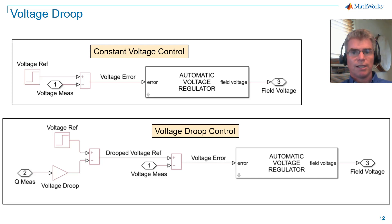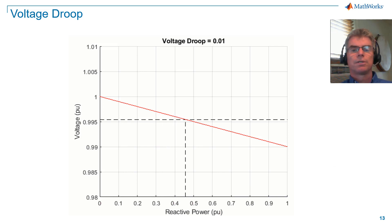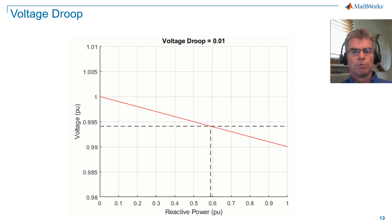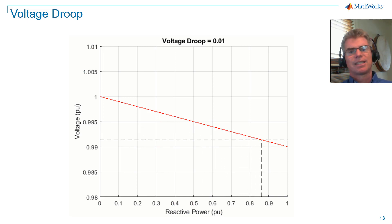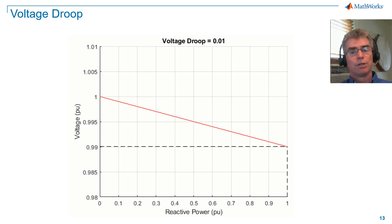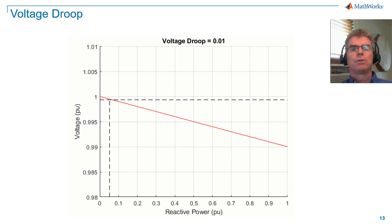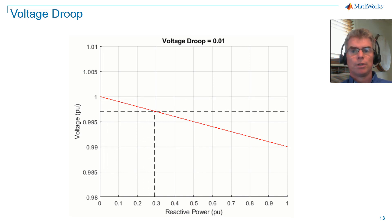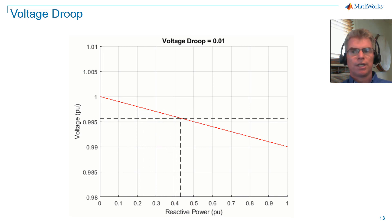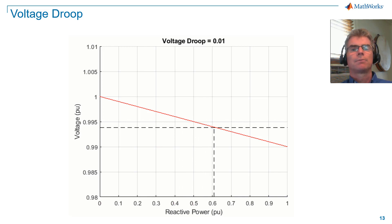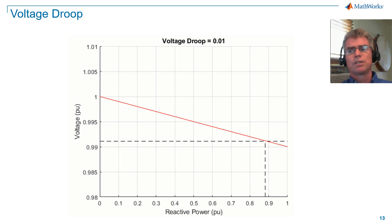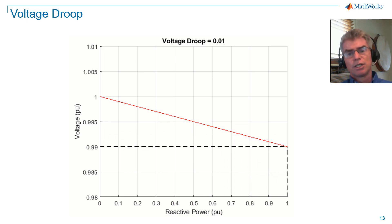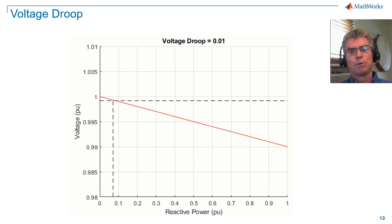The figure here shows the response of frequency to active power loading when we have a frequency droop value of 0.05 or 5%. The droop curve is shown in red, and the dashed lines indicate frequency and active power loading on a per unit or normalized basis. As we've set the droop value to 0.05, the frequency drops from one per unit to 0.95 per unit as we load the generator from zero active power to one per unit active power. Similarly for voltage droop with a droop value of 0.01 or 1%, the voltage drops from one per unit to 0.99 per unit as we load the generator from zero reactive power to one per unit reactive power. We've introduced droop control for both frequency and voltage, but how does this simple modification solve the stability issues we saw with isochronous and constant voltage control?